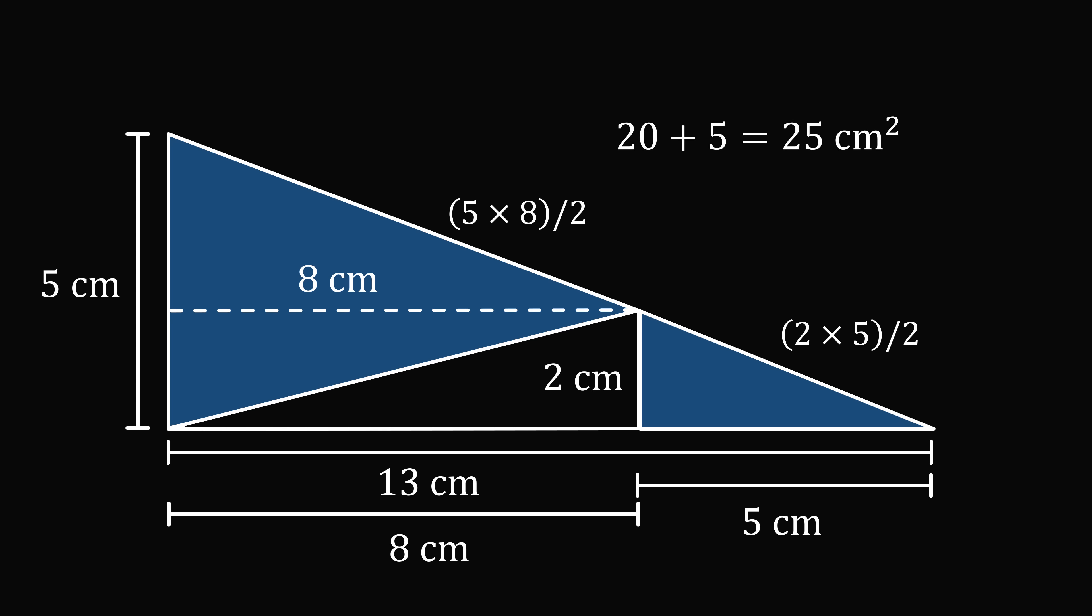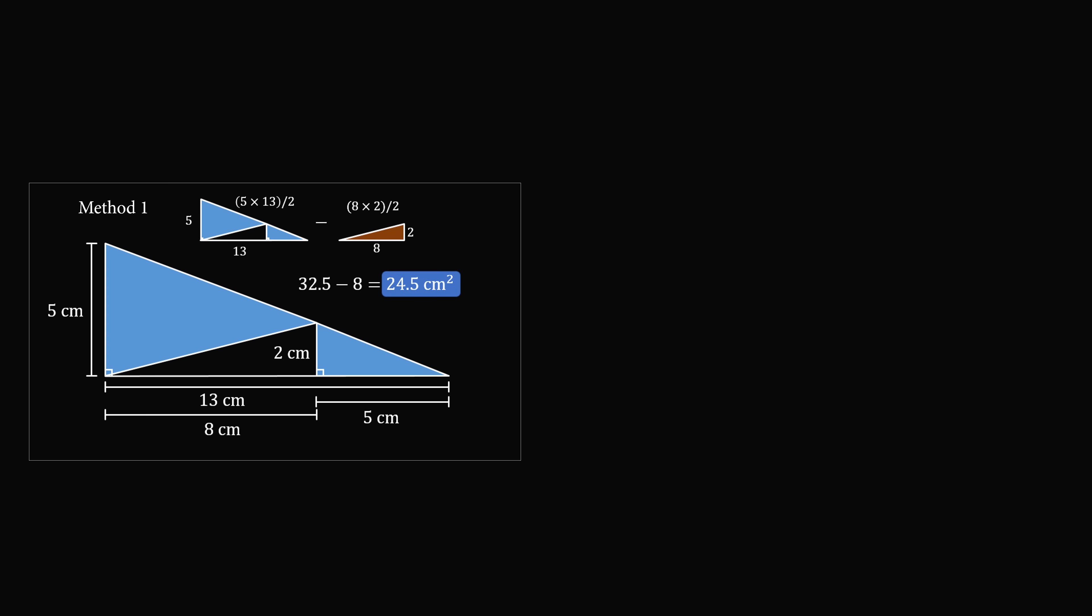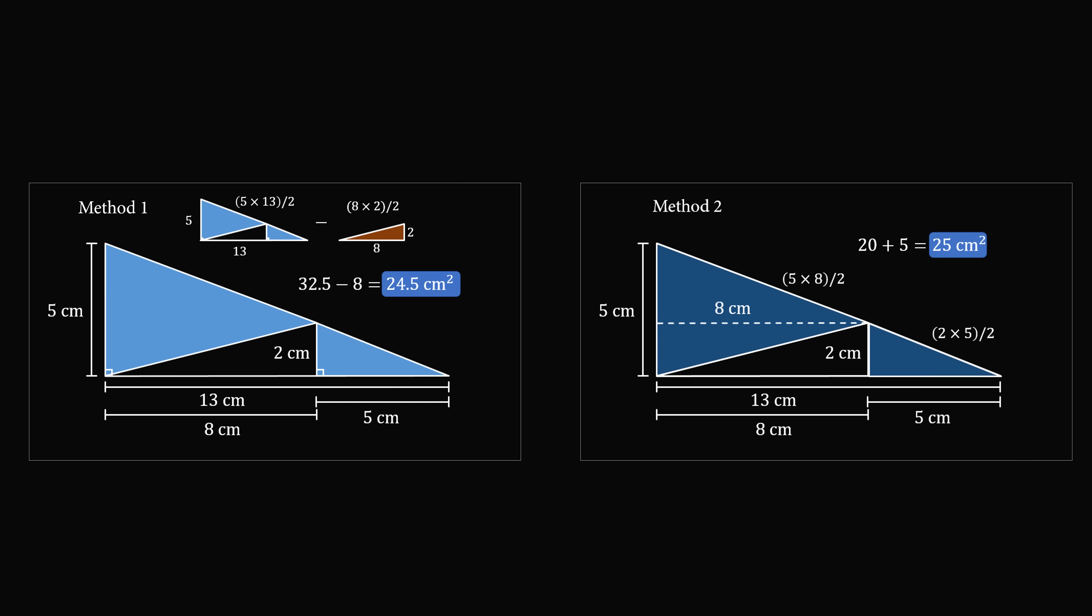So the first area will be equal to 20. The other area will be equal to 5. So now we have 20 plus 5, which equals 25 square centimeters. And that is the answer for the shaded area. But wait a minute! We've come up with two different answers. In the first method, we have an area of 24.5 square centimeters. And in the second method, we have an answer of 25 square centimeters. So what's going on?